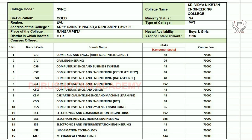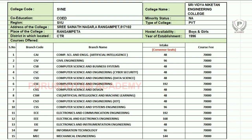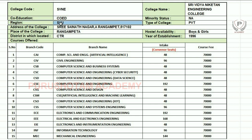Hello friends, welcome to Purushottam Academy. In this video, we will tell you about Sree Vidya Nikethan Engineering College. The college code is SVNE. The name is Sree Vidya Nikethan Engineering College. This is a Coed College and the region is SVU region.